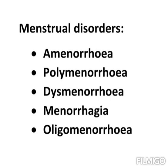The last type of menstrual disorder is oligomenorrhea. It is a condition with infrequent menstrual periods. It occurs in women of childbearing age. Some variation in menstruation is normal, but a woman who regularly goes more than 35 days without menstruating may be diagnosed with oligomenorrhea. So the menstrual cycle is a 28-day cycle, and if it exceeds 35 days, that is oligomenorrhea.